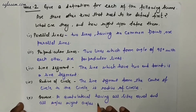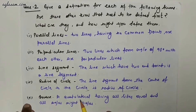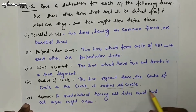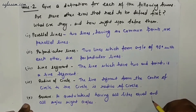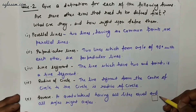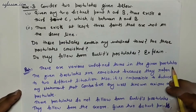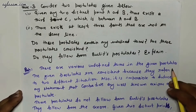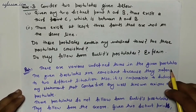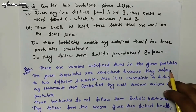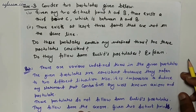Fifth, square — a quadrilateral having all sides equal and all angles right angles. Now question number three: consider two postulates given below.